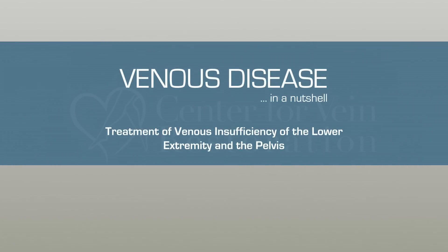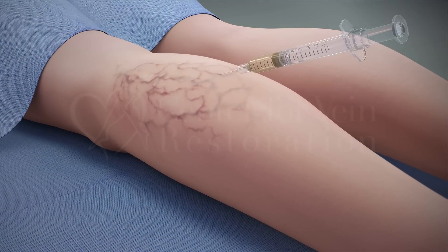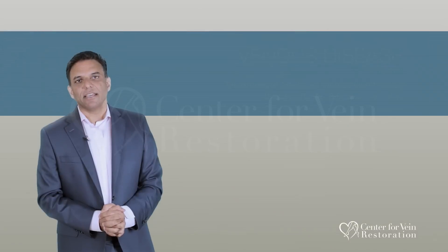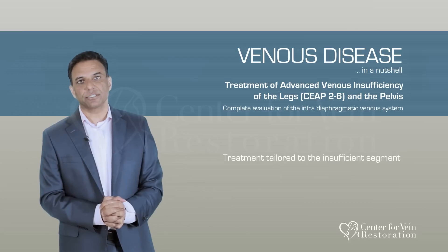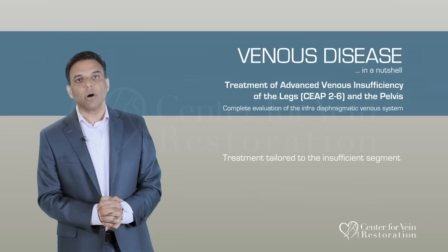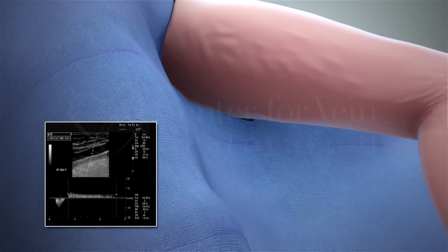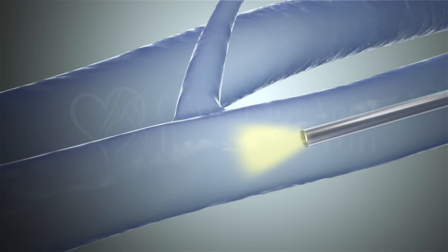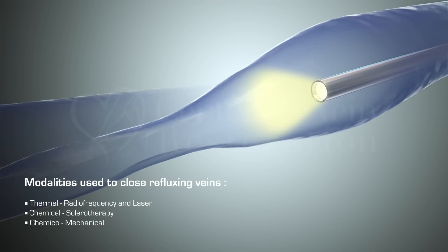In treatment of venous insufficiency, if the patient presents with purely cosmetic symptoms such as spider veins, these veins are treated with sclerotherapy or laser treatments only. In patients with more advanced venous insufficiency, the entire infradiaphragmatic venous system needs to be evaluated. This will tell us what part of that system actually needs to be treated. If the cause of the leg symptoms is venous reflux in the superficial veins of the lower extremity, the refluxing vein is closed through various modalities and blood is rerouted through a healthy vein.